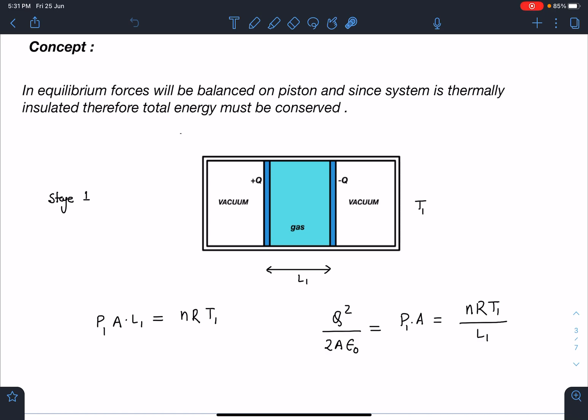So we are going to divide this problem in three stages. This is the initial stage, Stage 1 I am calling it. Charge is plus Q and minus Q and let's say initial distance between the pistons is L1 and temperature of the gas at this moment is T1. So I can balance the forces. First is PV equal to NRT I can apply and here electric force must be balancing the pressure force of the gas. So I can just write Q squared by 2 epsilon naught is equal to P1 into A and I can substitute this P1 into A value directly from here which is NRT1 by L1.